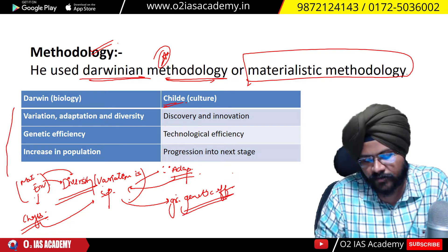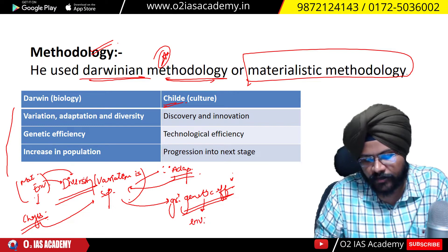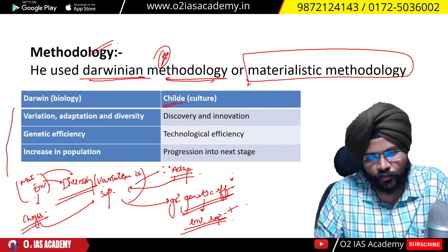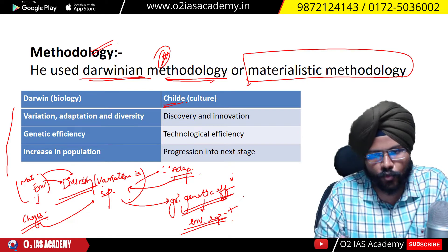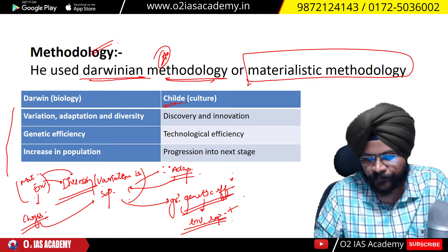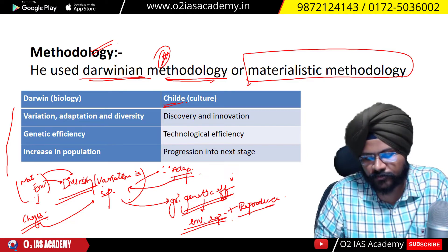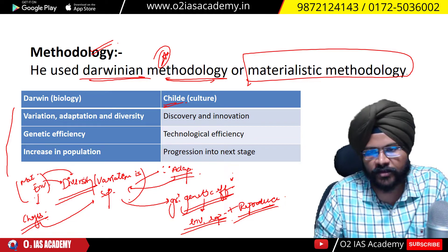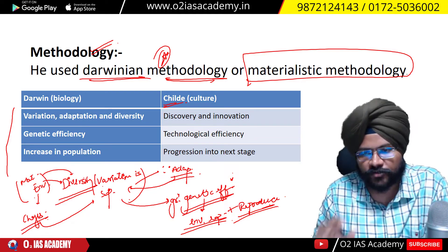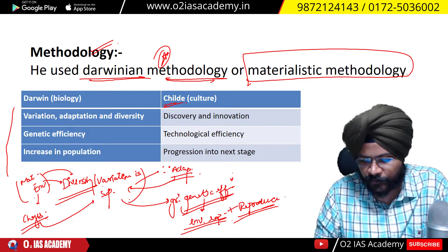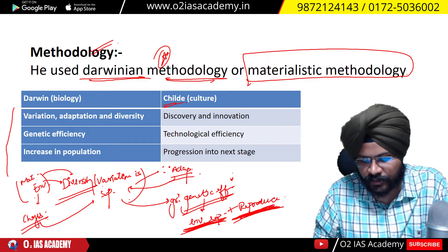Greater genetic efficiency means that species will be able to exploit the environment — they can extract food from it. Plus, those species will be able to reproduce more successfully. Their population will increase. The species that are reproducing well and extracting more nutrition from the environment will increase their population.